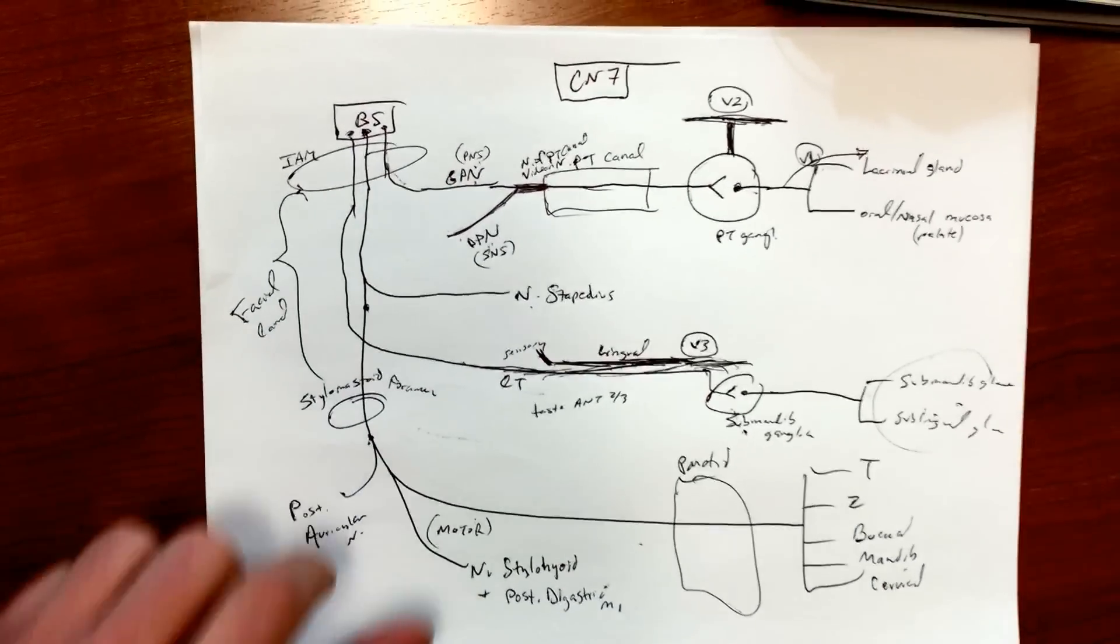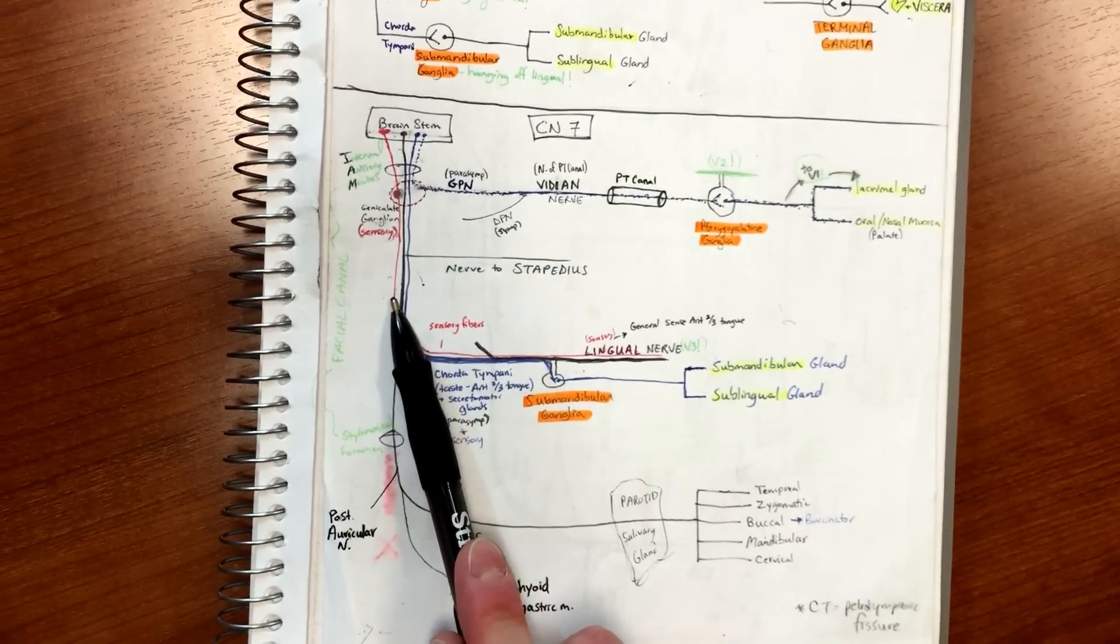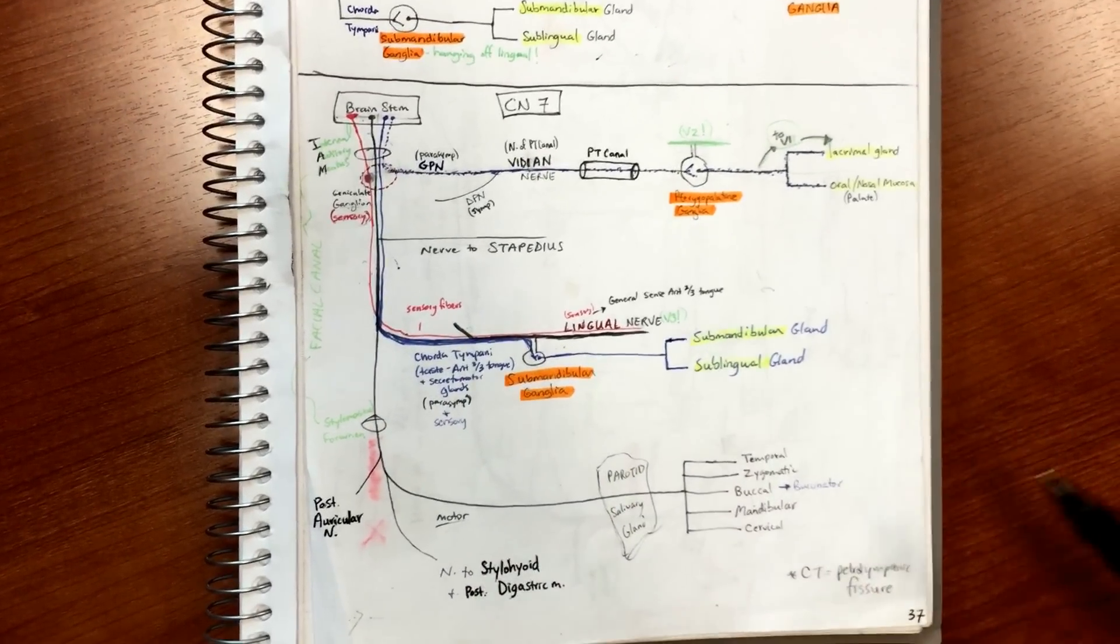And I believe that's all of it for facial nerve. And then you can see it here in color - that's probably the one you want to draw. The red is the sensory fibers, to keep that in mind. There's your lingual nerve, V3 going - and the blue is your parasympathetic. And that's it.